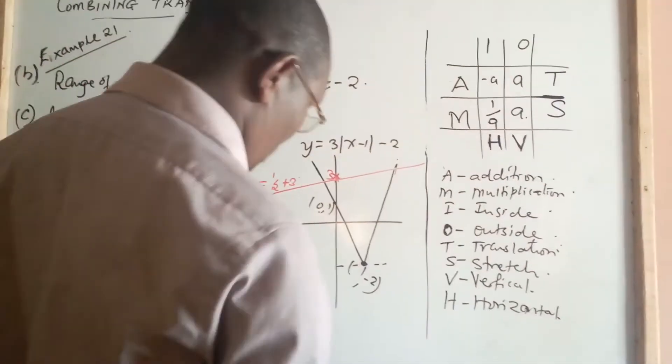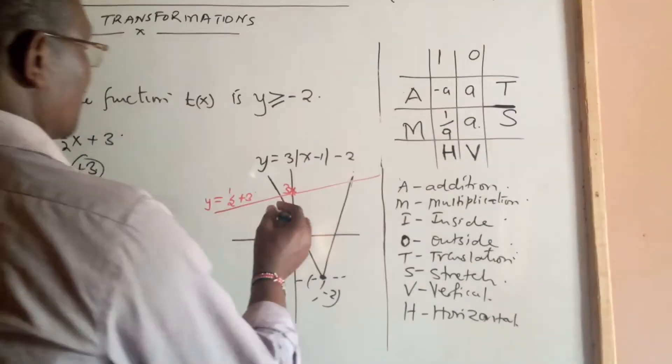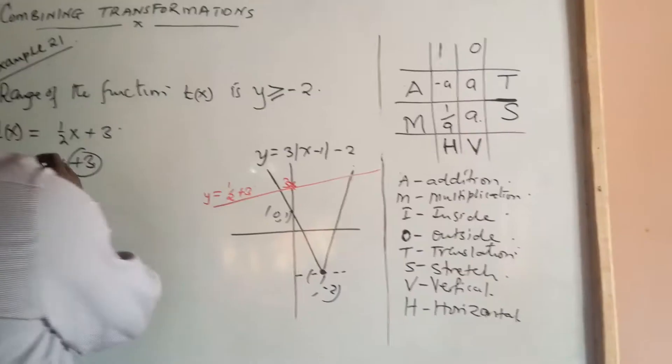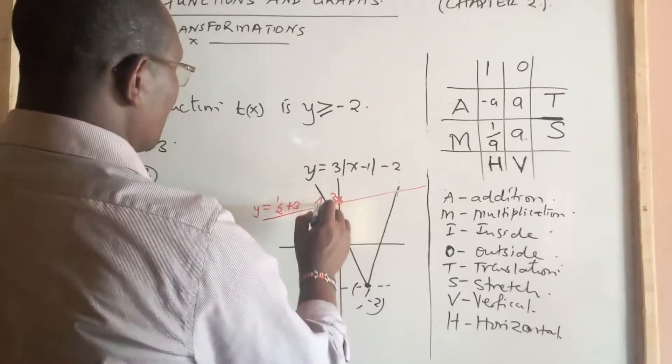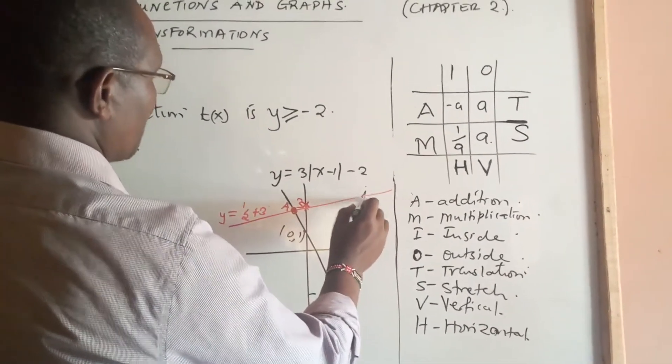Having said that, you can already see that this graph cuts the original graph f(x) in two positions. There is point A there, and there is point B there.